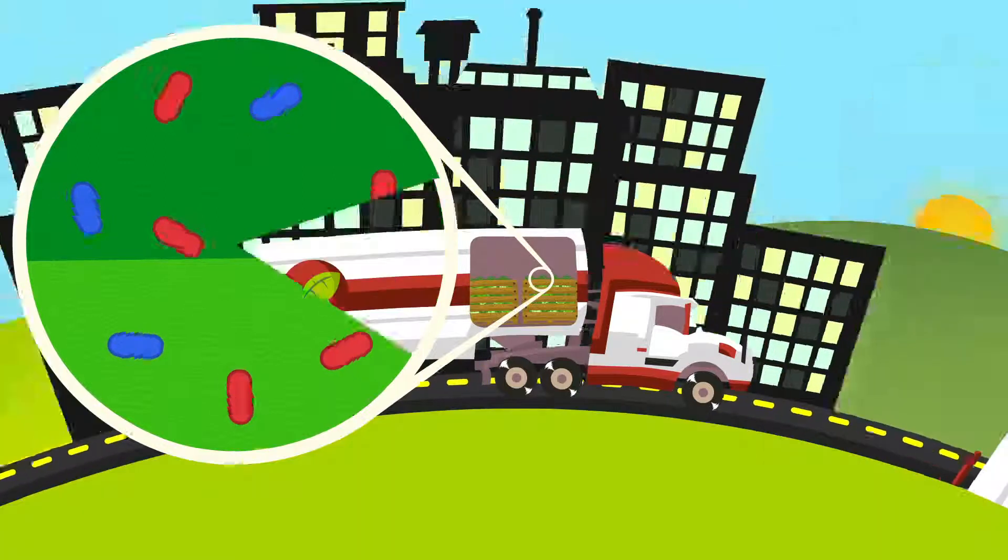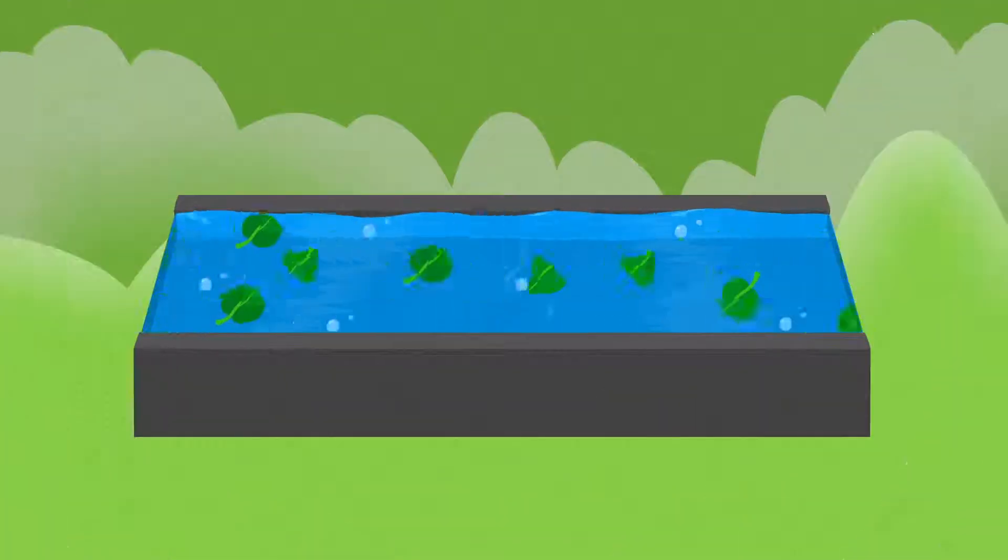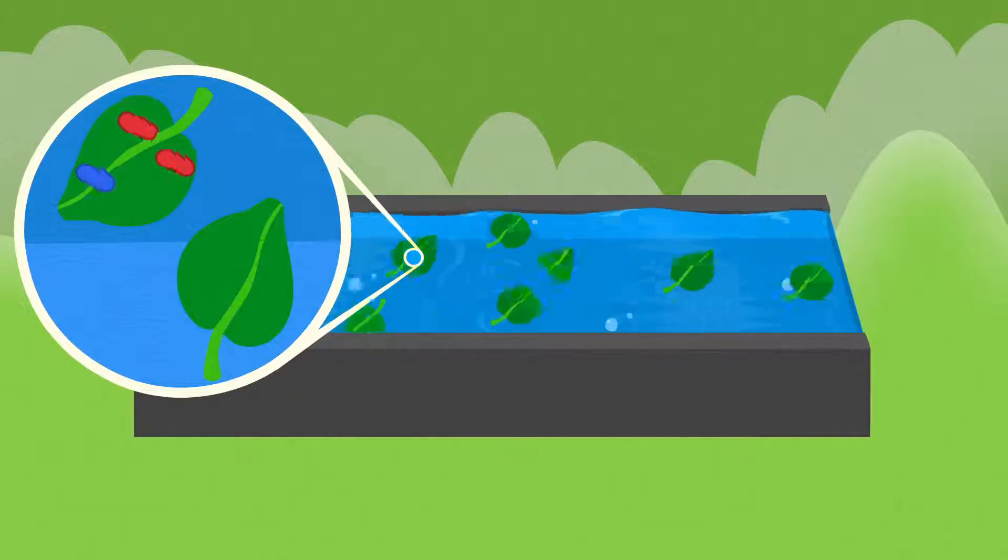When the leafy greens reach processing centers, bacterial populations are robust. Here, they will be washed in liquid sanitizer, which kills some bacteria but also allows for cross-contamination.